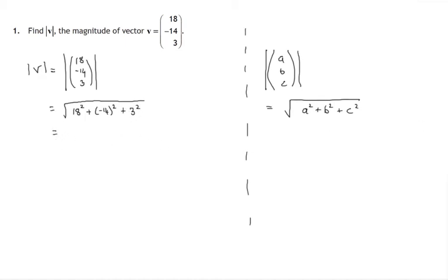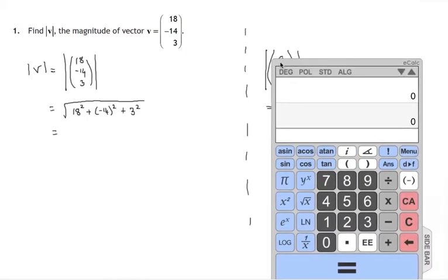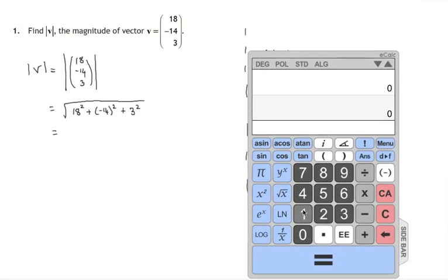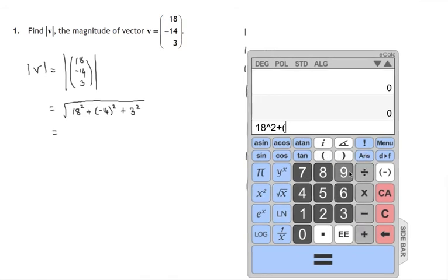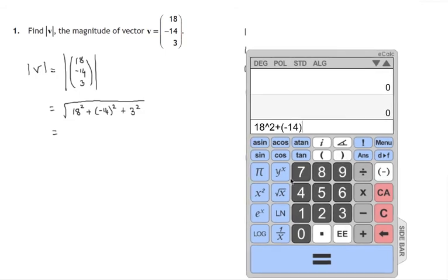Now this is paper 2, we're allowed to use calculator, so let's go ahead with that. There's 18 squared plus negative 14 squared plus 3 squared.